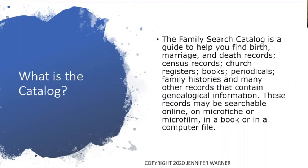What is the catalog itself? The catalog is a guide to help you find birth, marriage, and death records, census records, church registers, books, periodicals, family histories, videos, audios, CD-ROMs, and many other records that contain genealogical information. These records may be searchable online, on microfiche, or microfilm, in a book or a computer file itself.